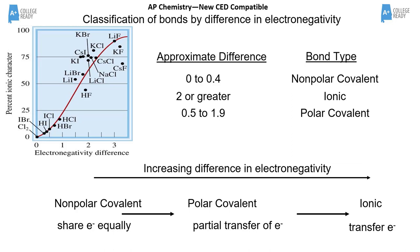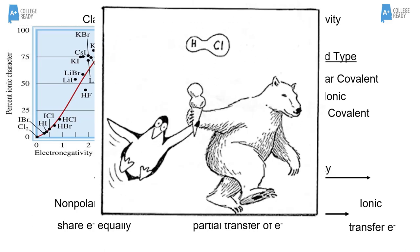Electronegativity values are not given on the AP exam, so students need to know that carbon-carbon bonds are definitely non-polar, and anything that's different will be at least slightly polar. In general, since we don't have numbers, anything that's just a hydrocarbon — carbons and hydrogens — is considered non-polar. Beyond that, students make decisions about which bond is more polar.